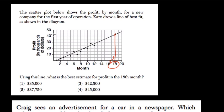So it's a little bit above $40,000, right? $50,000 is up here. $45,000 will be the halfway mark — it doesn't quite reach that, so we'll pick $42,500.